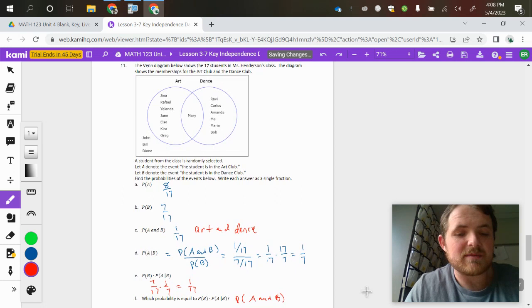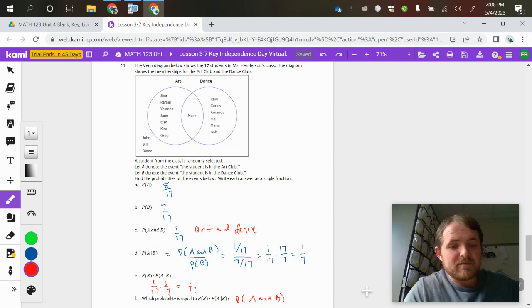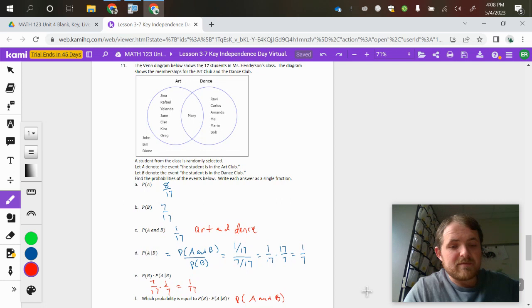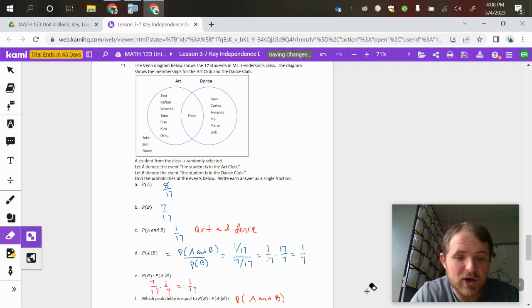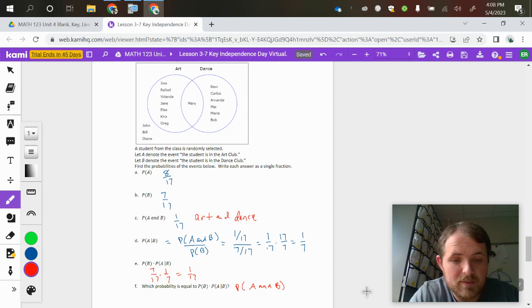This next one here is just supposed to demonstrate the concept because you have the probability of B of 7 over 17 and the probability of A given that B, the 1 over 7. It's just asking you to multiply those together and get 1 over 17, which will lead you to the reason why you did that was to look at part F there.